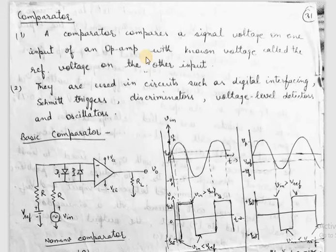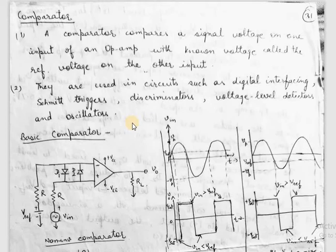It is very useful in many circuits such as digital interfacing, Schmitt trigger, discriminators, voltage level detectors, and oscillators. We are discussing it here because it works on the same principle as the astable multivibrator. We will be using the 741 IC op-amp to make a comparator.